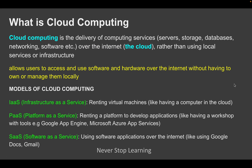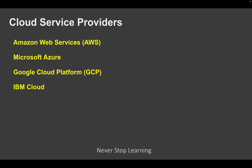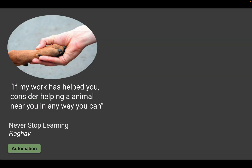In very easy words, that is what cloud computing is. We also have cloud service providers — organizations that provide all these infrastructure, software, and hardware resources. Some major cloud service providers are AWS, Microsoft Azure, Google Cloud Platform, IBM Cloud, Oracle Cloud, and Alibaba Cloud. These are some of the major ones, though there are many more. I hope this was very useful. Thank you for watching and never stop learning.